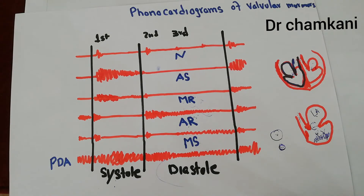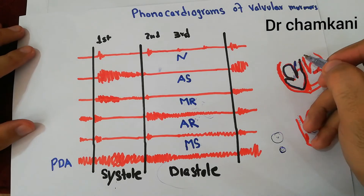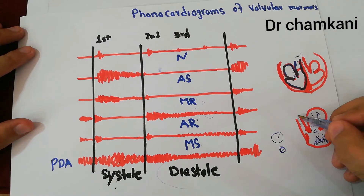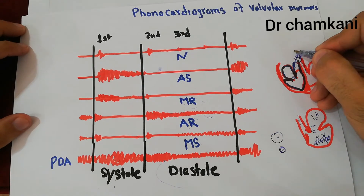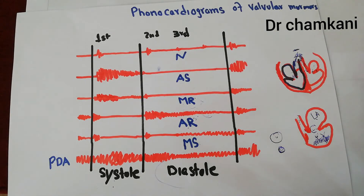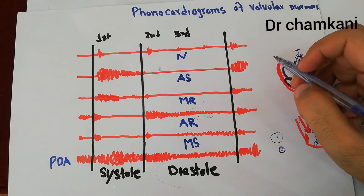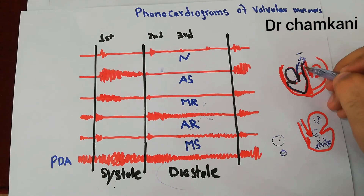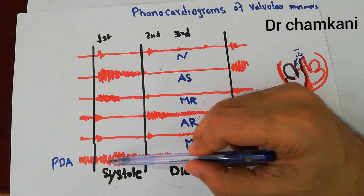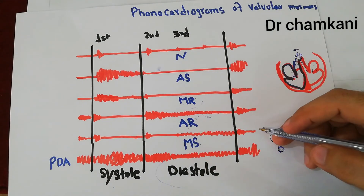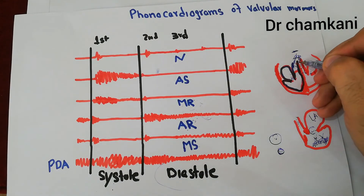Finally, the patent ductus arteriosus (PDA) murmur involves a connection between the aorta and the pulmonary artery. Normally there is no connection between them, but in PDA — a connection normally present before birth that should close after — this channel persists in the newborn. The result is a murmur present throughout both systole and diastole, called the machinery murmur, which is the characteristic murmur of patent ductus arteriosus.